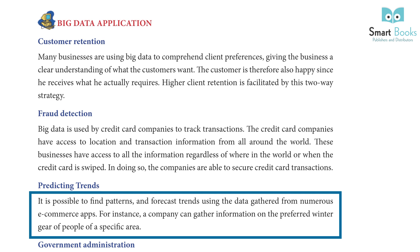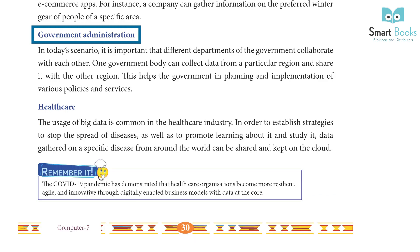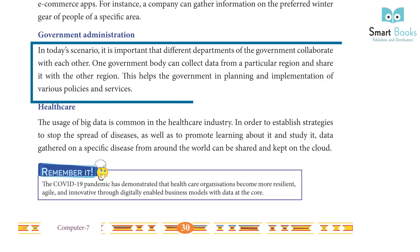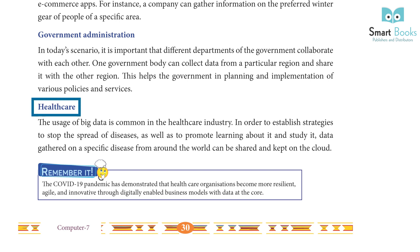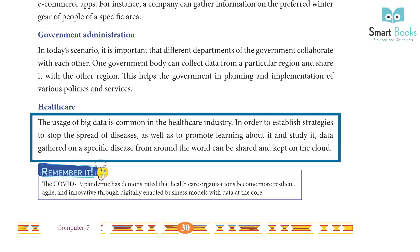For instance, a company can gather information on the preferred winter gear of people in a specific area. Government Administration: It is important that different departments of the government collaborate with each other. One government body can collect data from a particular region and share it with another region, helping the government in planning and implementation of various policies and services.